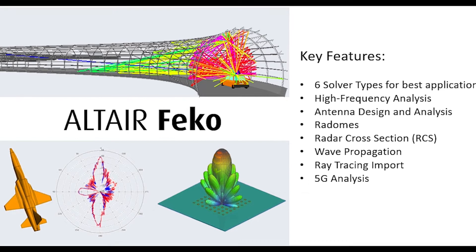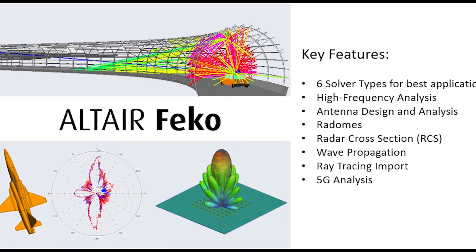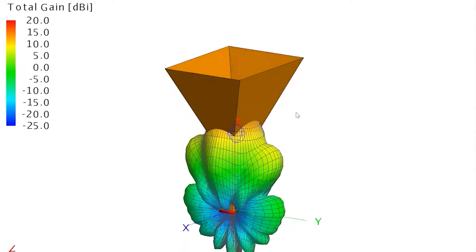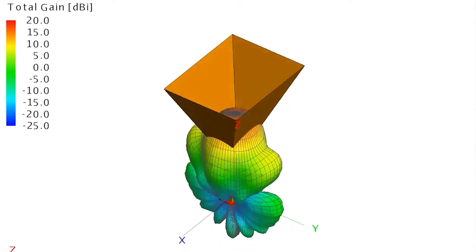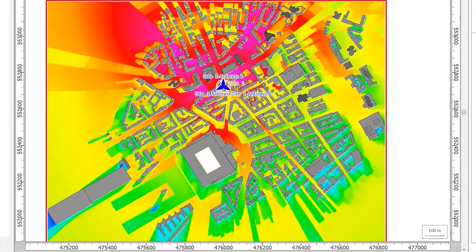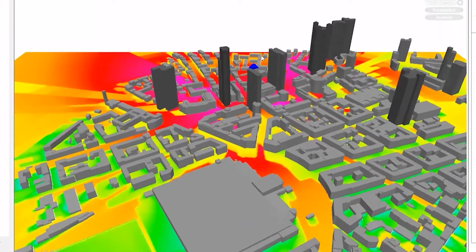Altair FEKO is a widely used simulation tool for users who need to understand high frequency applications like electromagnetic compatibility, antenna design and placement, 5G applications, scattering analysis and radar cross sections. FEKO also includes a wave propagation tool called WinProp, which allows users to understand specialized applications for radio network planning across multiple environments.